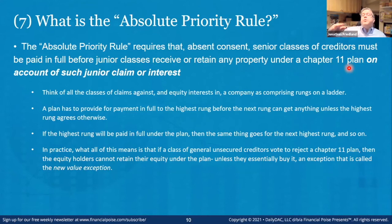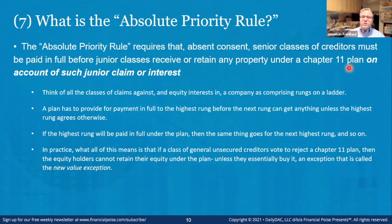For our purposes: administrative claims come first, then other priorities, then general unsecured claims, then any unsecured claims that have been subordinated, and then equity interests — with preferred ahead of common. Often, there won't be enough to pay unsecured creditors in full. If the unsecured class doesn't agree otherwise, that means equity gets nothing. If that happened frequently, companies might be less inclined to file Chapter 11.